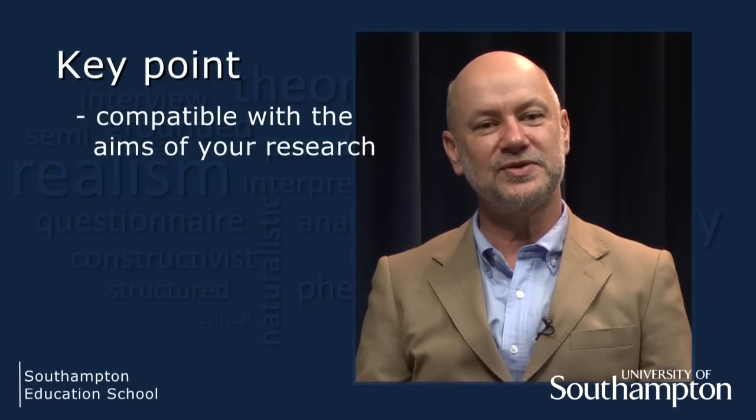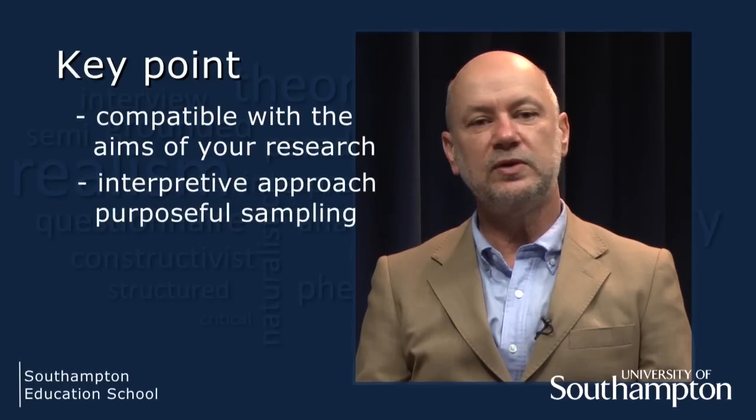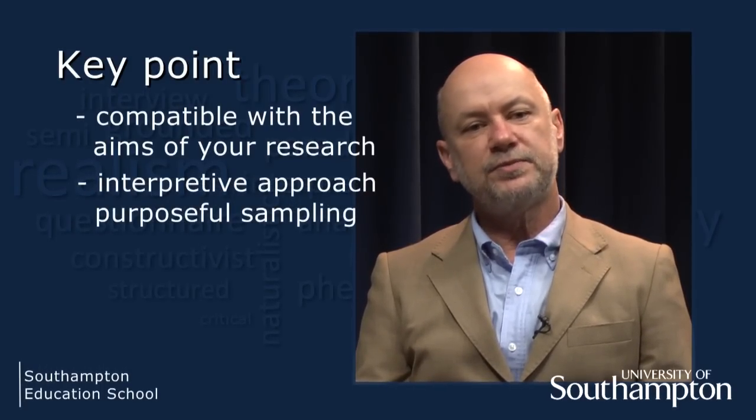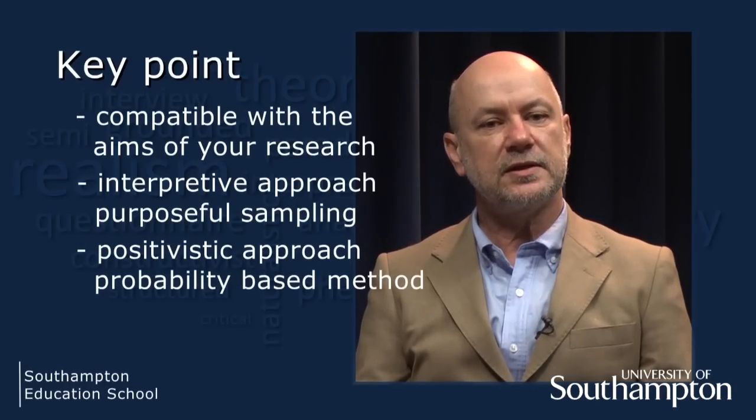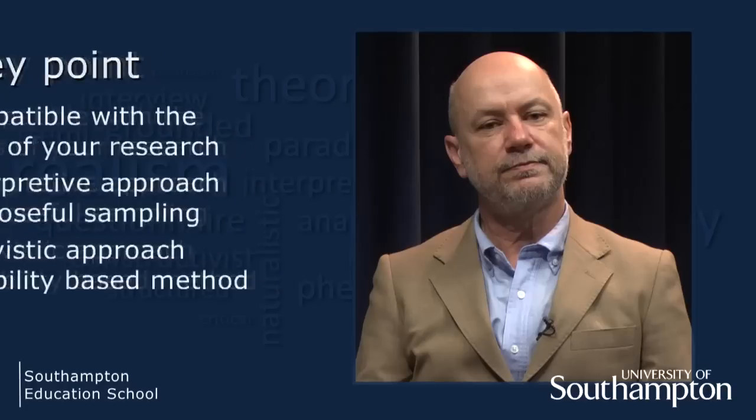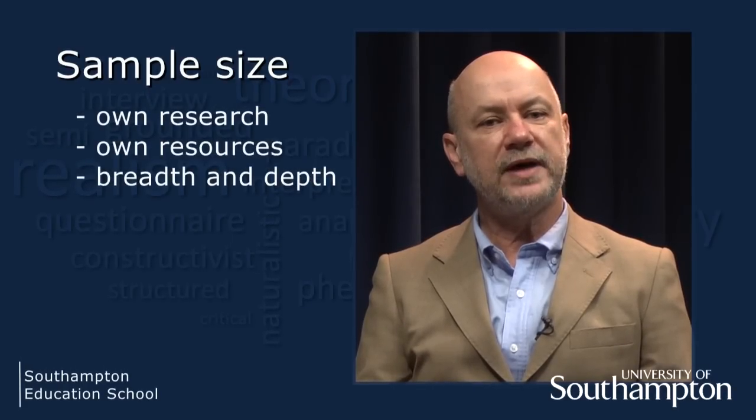The key point about sampling is to make sure you select your participants in a manner that is compatible with the aims of your research. If you are using an interpretive approach, then you should be looking at purposeful sampling methods. If you are adopting a positivistic approach, then you need to select a representative sample using a probability-based method. When working out what constitutes an appropriate sample size, consider your resources and the balance between breadth and depth of information. Finally, remember it is always important to explain why you have made certain decisions – you will be expected to discuss your sampling decisions in your dissertation.